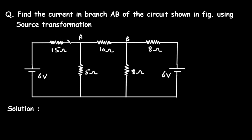If you want to buy my notes, check the link in the comment section and install the app now. In this video we will see a problem on source transformation. Question: find the current in branch AB of the circuit shown in the figure using source transformation.